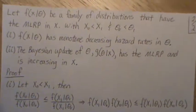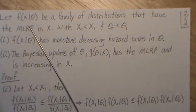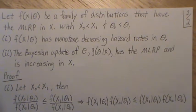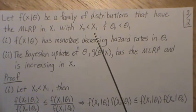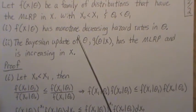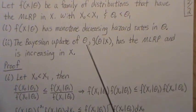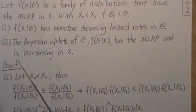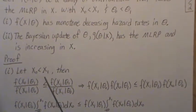Now let f(x | theta) be a family of distributions that has the monotone likelihood ratio property in x. With x_0 less than x_1 and theta_0 less than theta_1, two results hold: f(x) has monotone decreasing hazard rates in theta, and the Bayesian update for theta — call it g(theta | x) — has the monotone likelihood ratio property and is increasing in x.